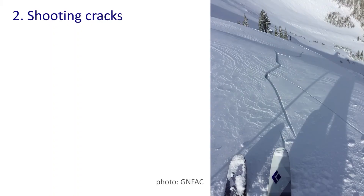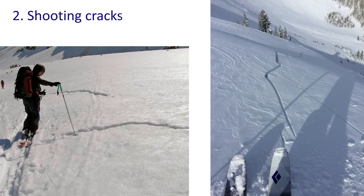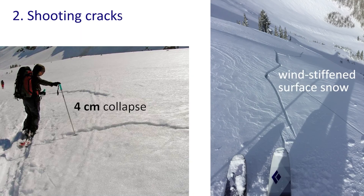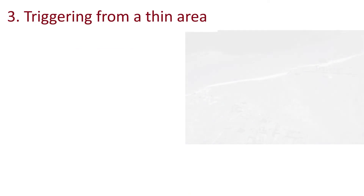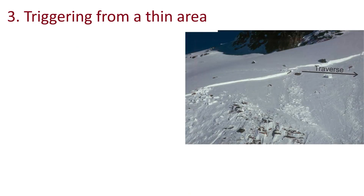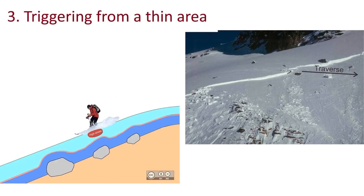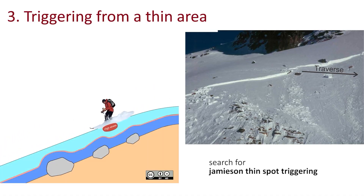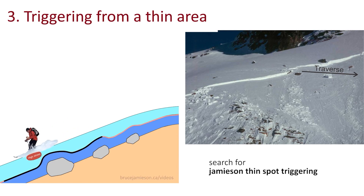The propagating collapse often stops at a brittle crack through the slab called a shooting crack. A shooting crack is often the boundary of a woof. These are easier to see when the collapse is large or the snow surface is hard, for example when stiffened. The photo shows the traverse where a fatal slab avalanche was triggered from a thin spot. Here is how the crack starts at a thin spot and propagates inside the snowpack. To see a video on triggering from a thin spot, search for these keywords.